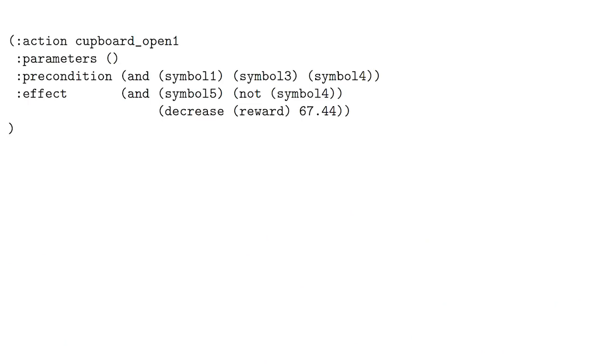Here's an example learned operator, which describes the conditions under which Anna can run the cupboard opening skill, and what happens if she does. The operator says that symbols 1, 3, and 4 must be true to open the cupboard.